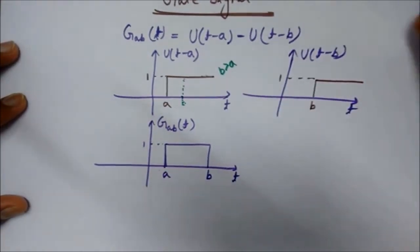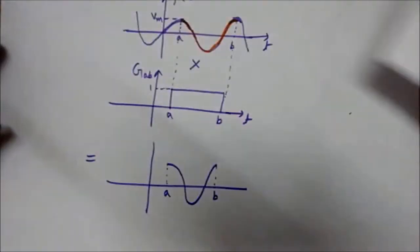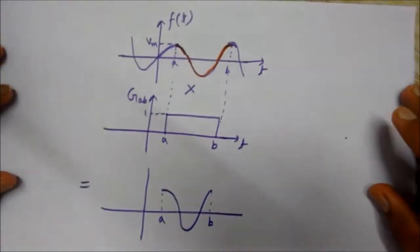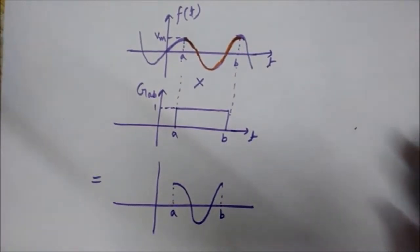Now I'm going to tell you a very important property of this gate signal. If I multiply this gate signal with any signal, then it will become 0 at all the values which are outside this interval a and b, and that signal will be unaffected or its values will not change within the a-b interval.